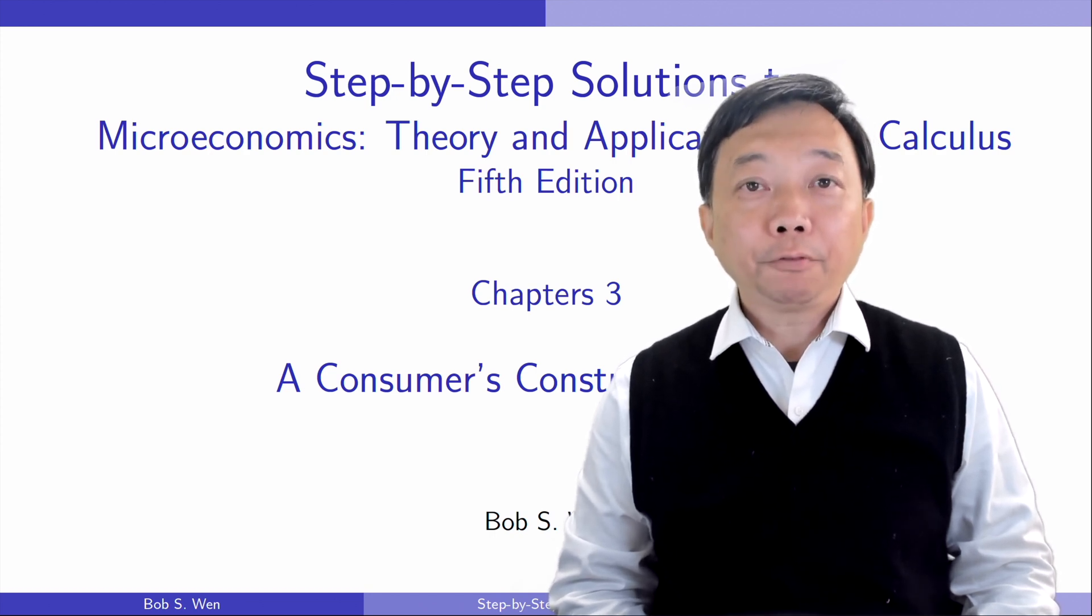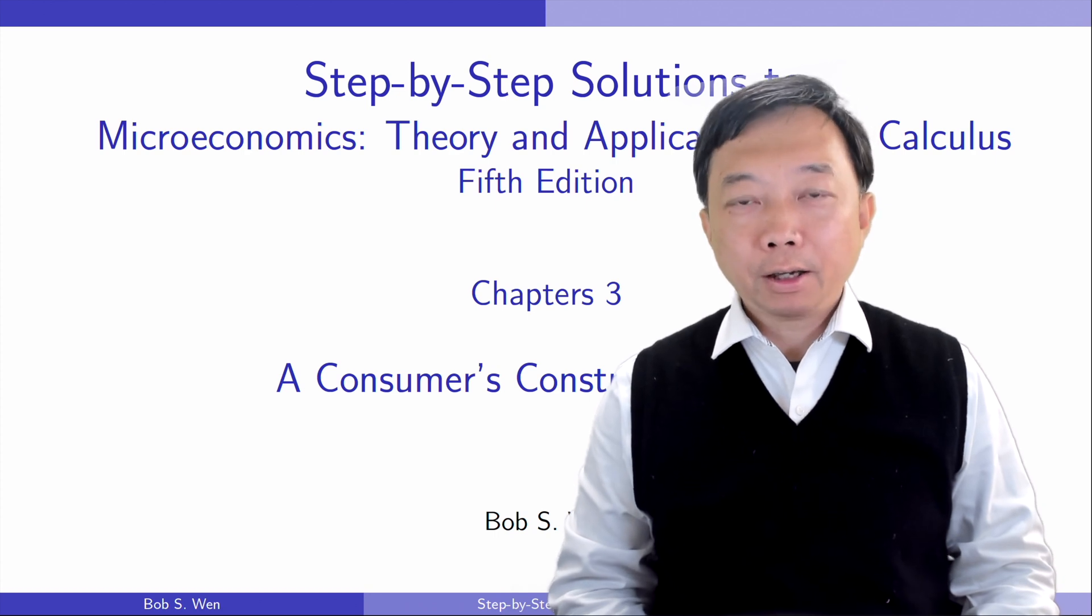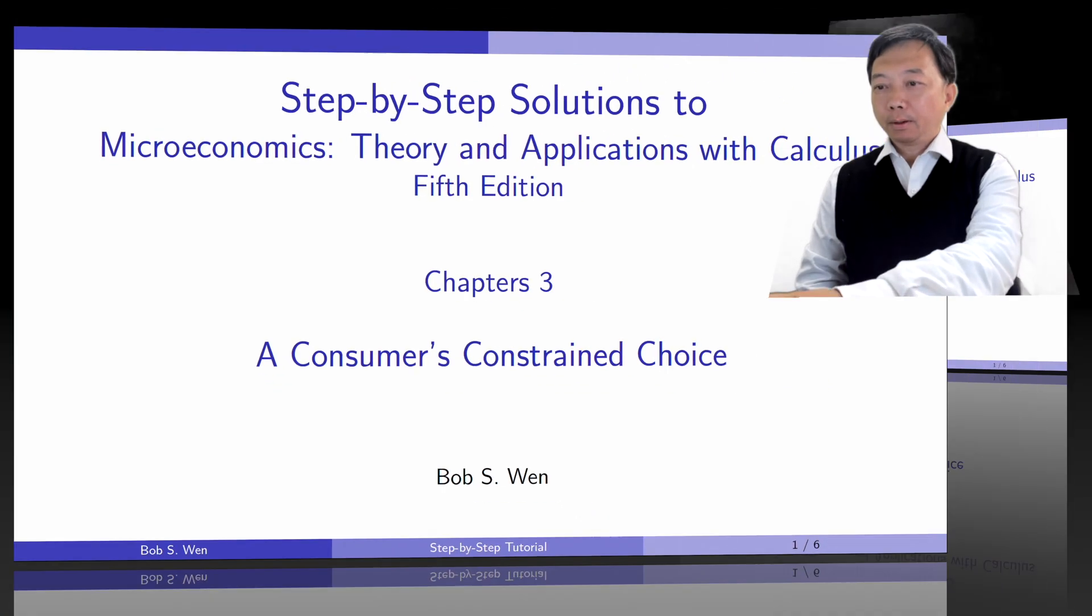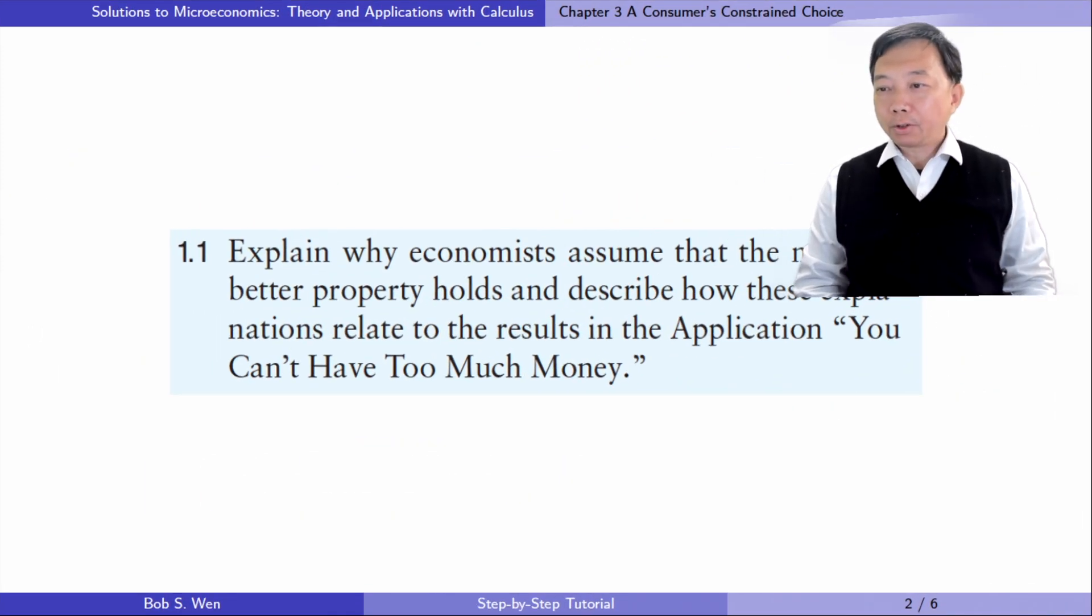The first part of this chapter is about consumer preferences. Let's do exercise 1.1. Explain why economists assume that more is better and describe how these explanations relate to the results in the application 'You Can't Have Too Much Money.'